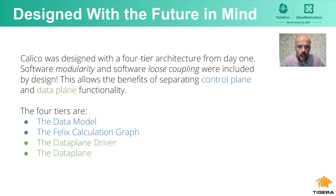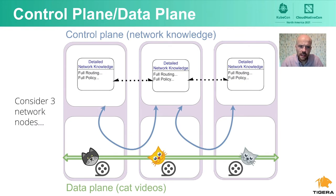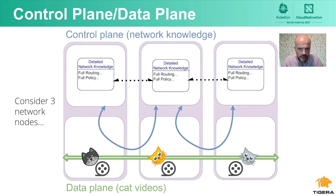Let's look in more detail at the control plane/data plane concept. This diagram shows three network nodes — each might be a compute host, a hypervisor for virtual machines, a container host, a router, or a switch. Conceptually, each node is made up of a control plane at the top and a data plane at the bottom. The control planes talk to each other and their job is figuring out what's going on in the network and establishing consensus — for example, routing protocols.